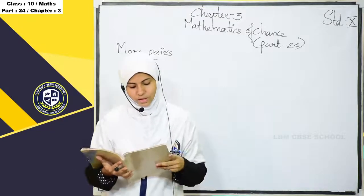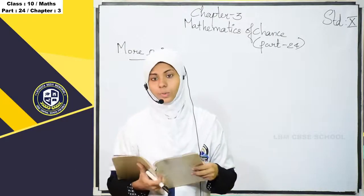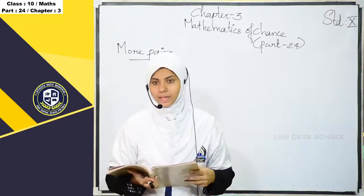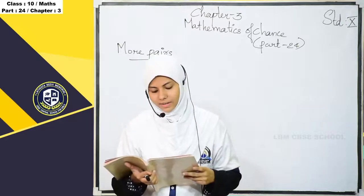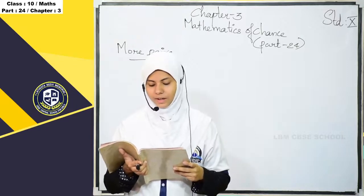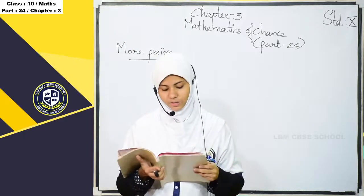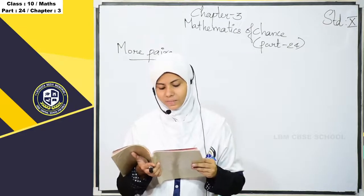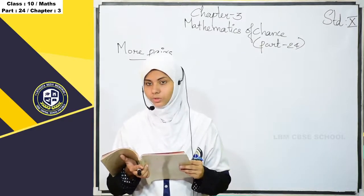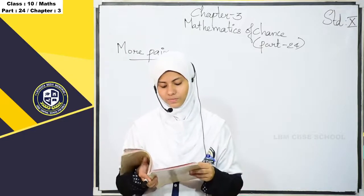I will explain More Pairs through one example. Two boxes — one containing 10 slips numbered 1 to 10, and the other 5 slips from 1 to 5. One slip is taken from each box. What is the probability of both being odd?